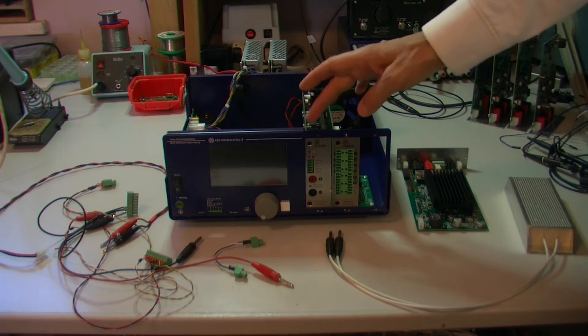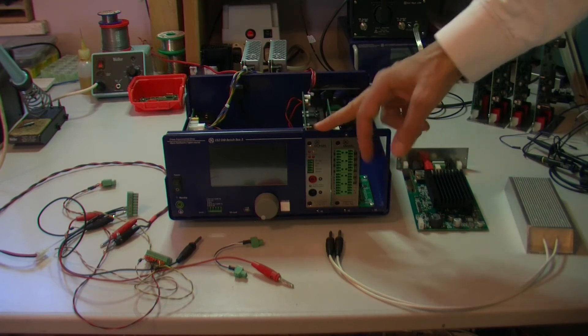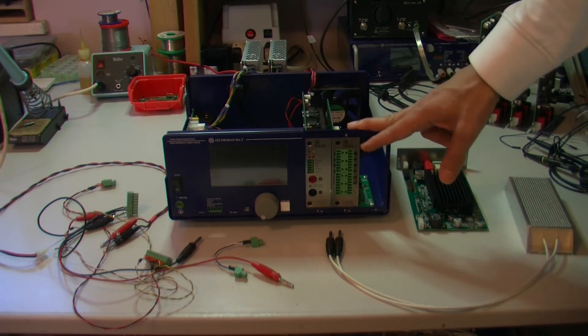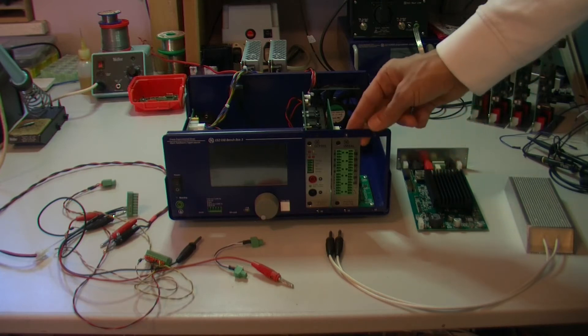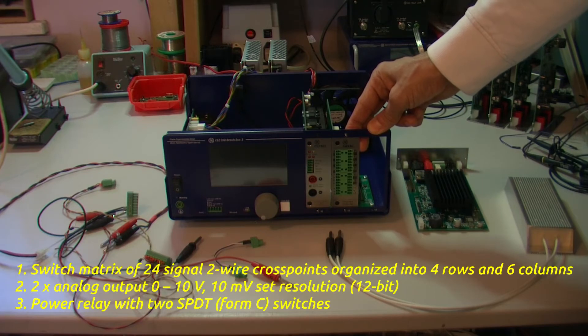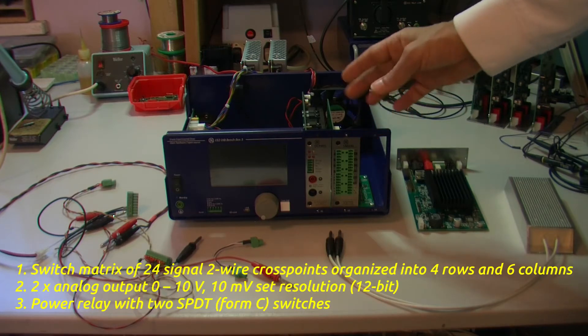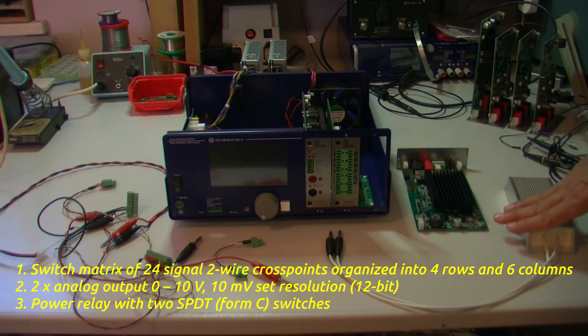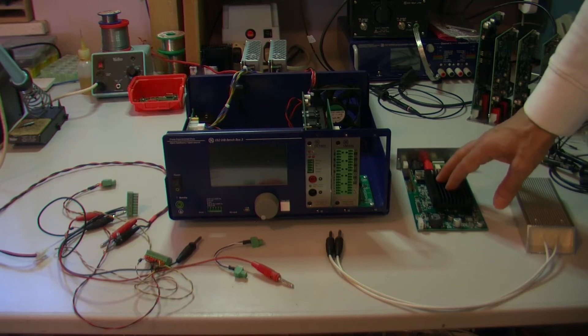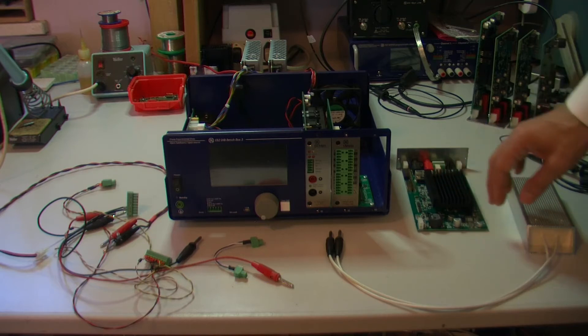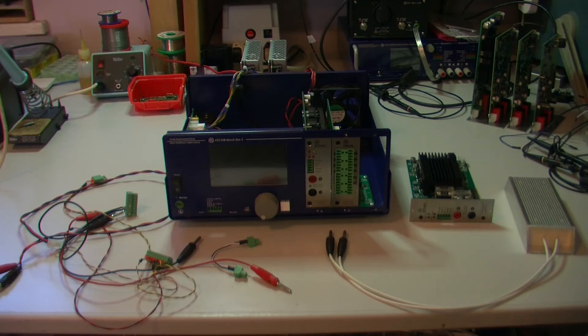For that we will use another DCP405 and a new module called SMX46, which has three functionalities: switch matrix, analog outputs, and power relay, which can disconnect load at the output of the power module. To do that we also need some wiring.